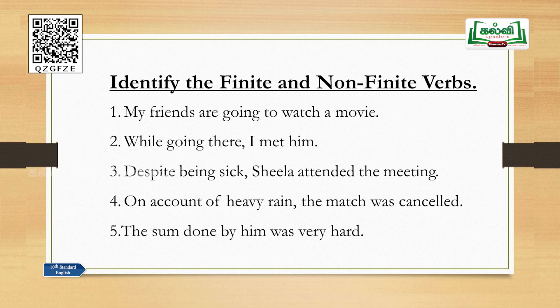We have come across finite and non-finite verbs. You may ask: why do we learn this? When you want to understand what a simple, complex, or compound sentence is, the basic idea comes from identifying finite and non-finite verbs. When you are very thorough with this, you can easily identify the simple sentence first. Let us now do the exercise: identify the finite and non-finite verbs in the given sentences.